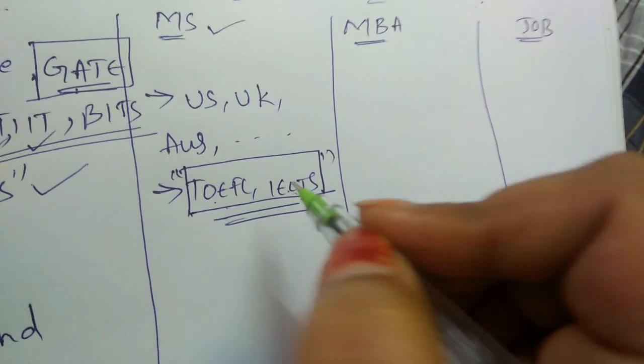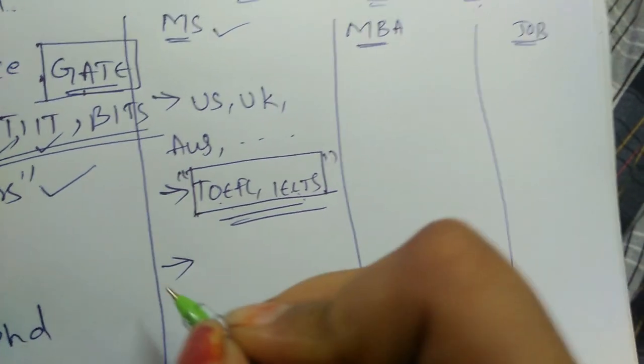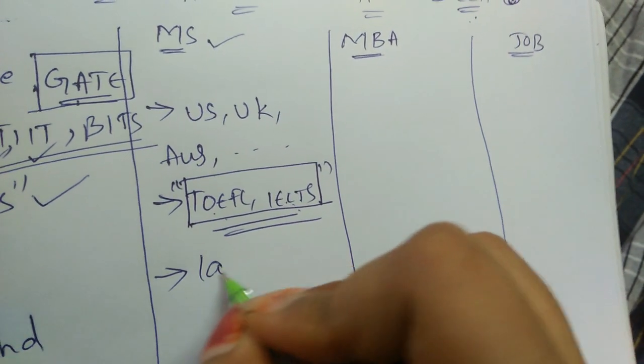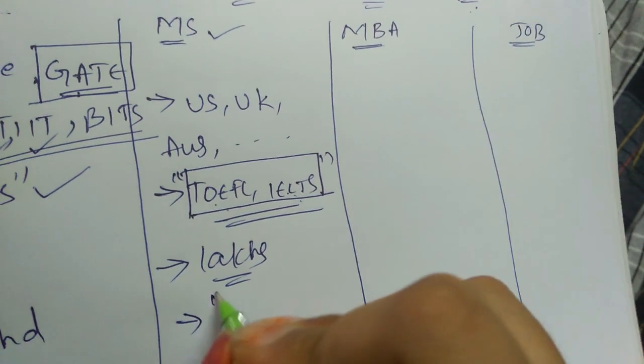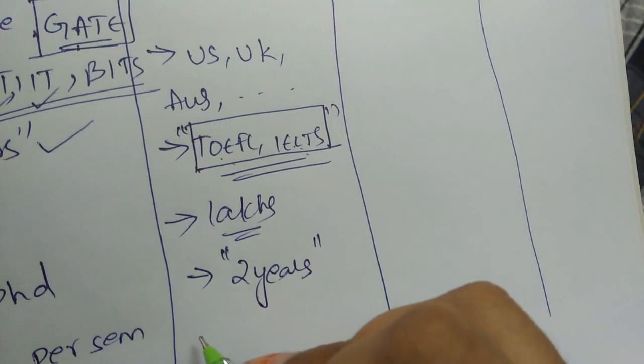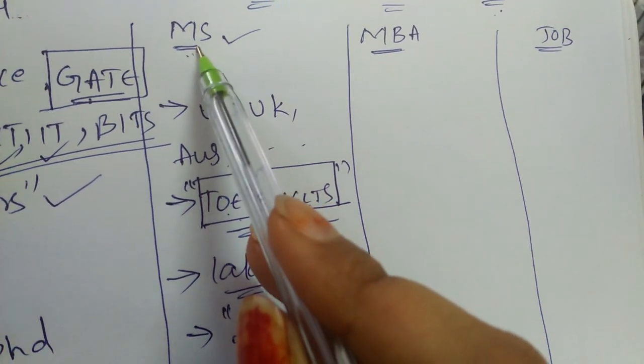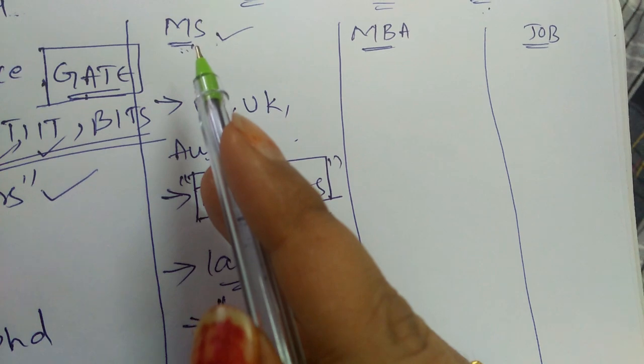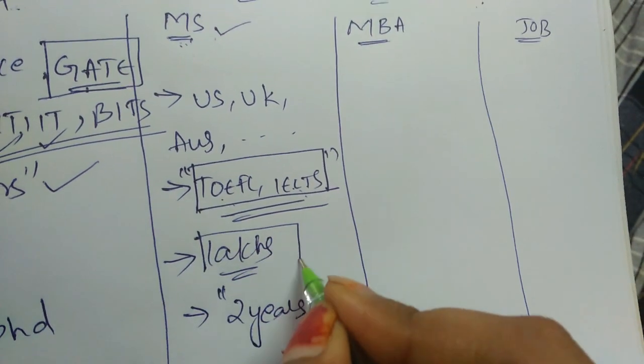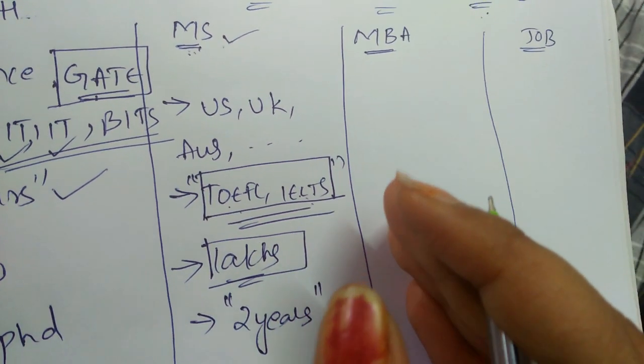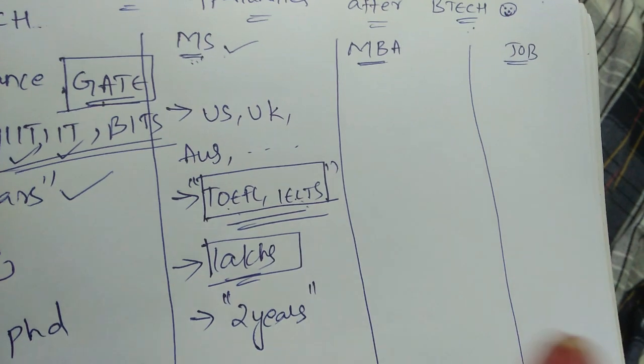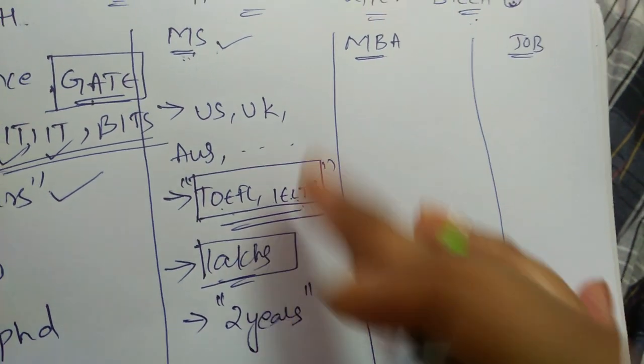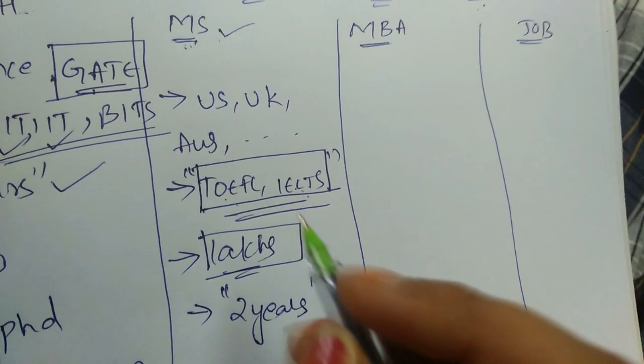Coming to MS, as it is a foreign university you need to spend in lakhs per year. The duration of MS course will be two years. The difficulty in MS is you need to spend few lakhs. You need to at least spend above 15 to 16 lakhs minimum for each year.